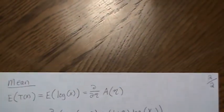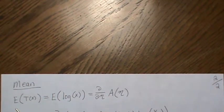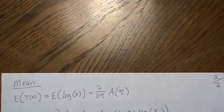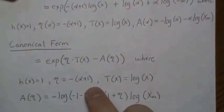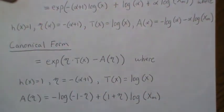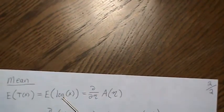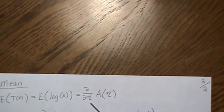The theory says that the mean of the sufficient statistic, and on the previous page I don't think I pointed it out but it was kind of obvious that the sufficient statistic is log of X. In this case we're finding the mean of the log of X, and that says take the derivative of our log partition with respect to eta.